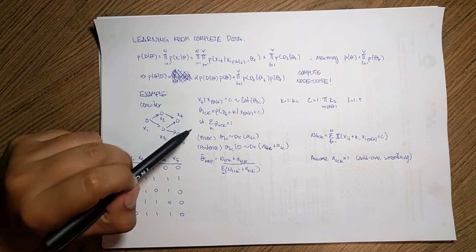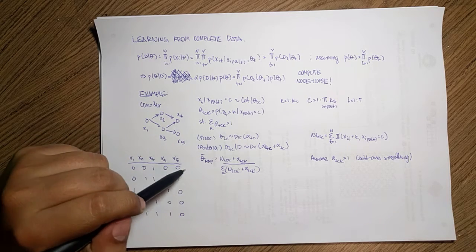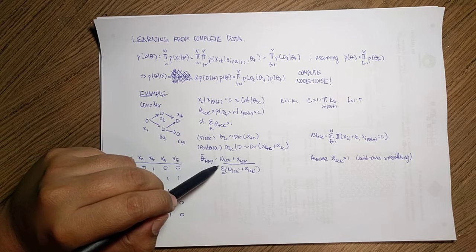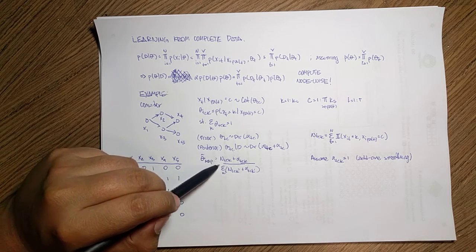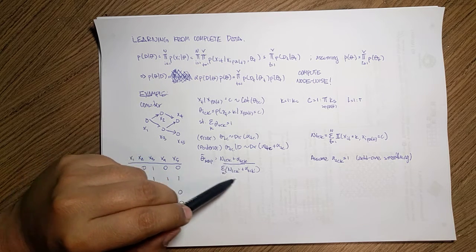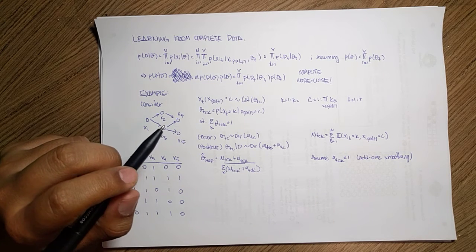And if you remember from these, since everything is a Dirichlet, my maximum posteriori is just the addition of these counts. The counts from my data plus the counts from my priors. And then I just add everything together to compute the ratios.